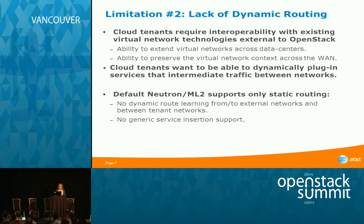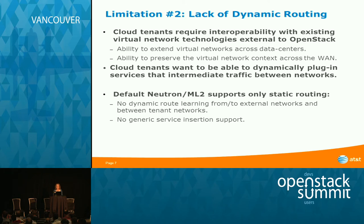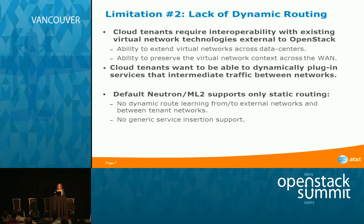The second limitation is lack of dynamic routing — a more obvious one the community agrees needs addressing. It's typically explained in terms of resiliency: if you lose one path to an external network, dynamic routing lets you fail over. Also, without dynamic routing it's very difficult to extend networks across data centers or preserve the mutual network context across the WAN — especially for private clouds where enterprise customers already have networks in the WAN or metro network.